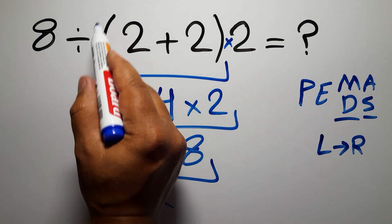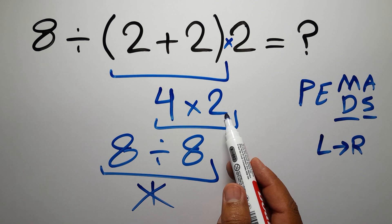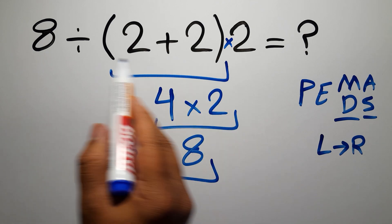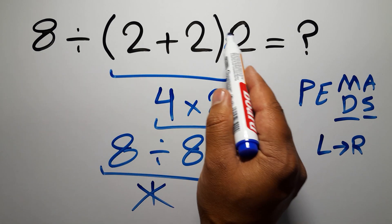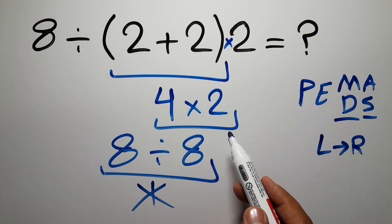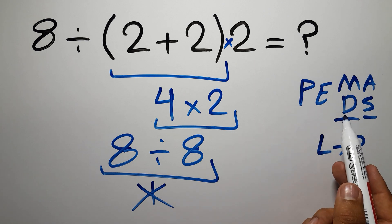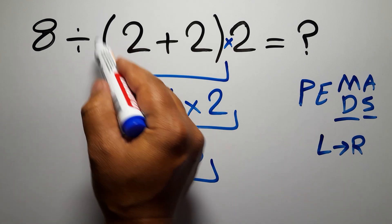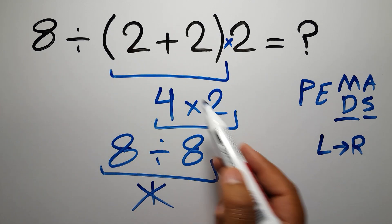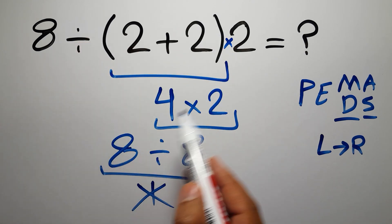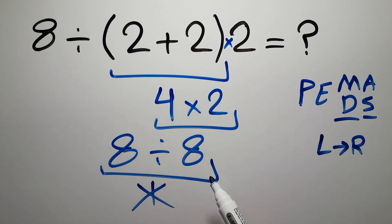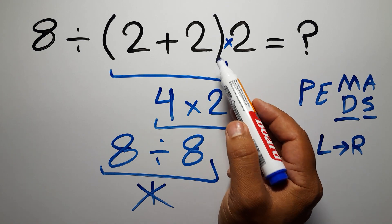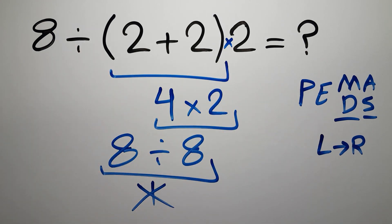So first we have to do these parentheses, and after these parentheses we have one division and one multiplication. As I said, multiplication and division have equal priority, and we have to go from left to right. So after these parentheses, we have to do this division, then this multiplication. If you do this multiplication before this division, it is wrong.